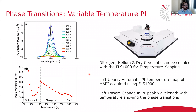Another application of steady state PL is looking at phase transitions. Perovskites can exist in different phases depending on temperature, so the spectrometer can be equipped with a cryostat. You can monitor the change in photoluminescence as a function of temperature in an automated temperature map, and plot the change in PL wavelength as a function of temperature, which allows you to identify the location of the phase transitions.